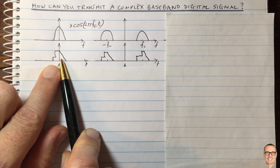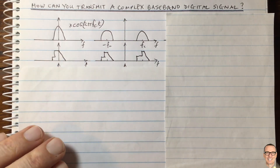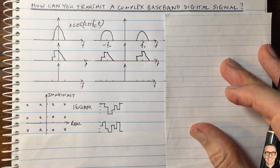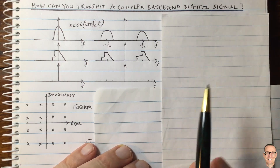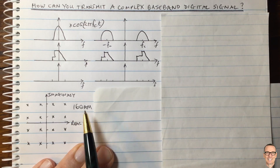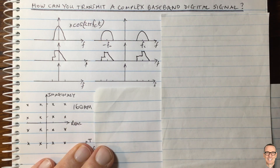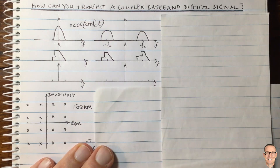What even is a complex baseband digital signal? As we've said, it's not real. Here's one example: 16QAM, which is also part of OFDM — part of 4G and 5G mobile cellular standards. These standards send digital signals which are complex at the baseband, so let's understand what that means.